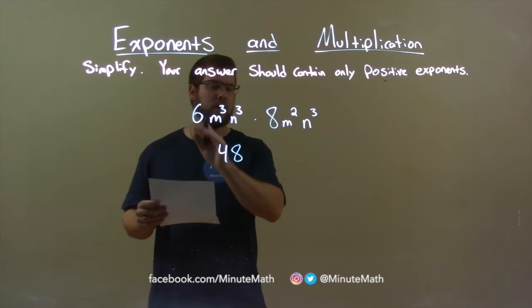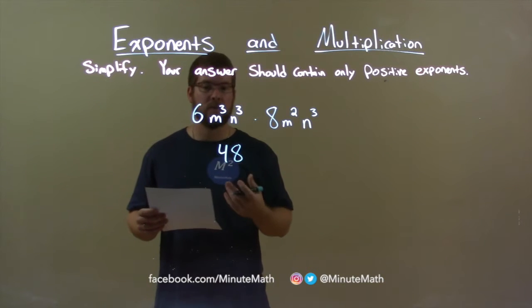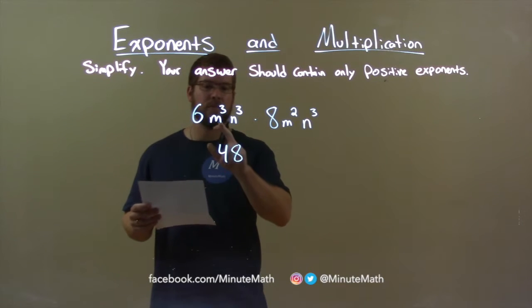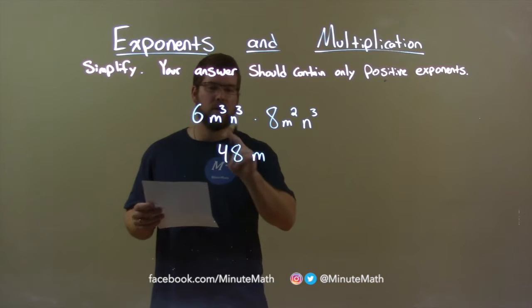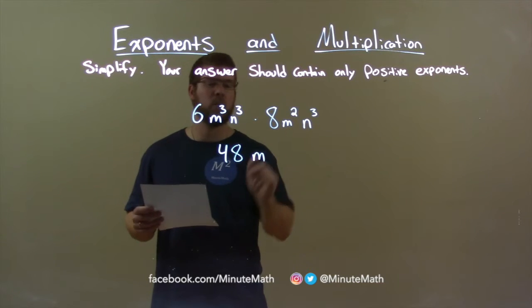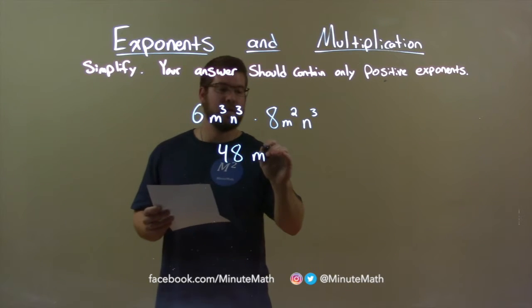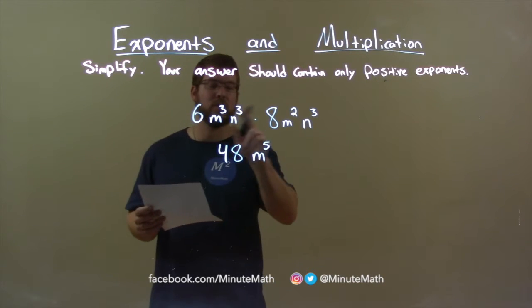I've now finished my coefficients and have to deal with the variables. m is the first variable, and we can only multiply like variables. m times m, right? Look at the basis. Well, m to the third power times m squared, we add the exponents is m to the fifth power. 3 plus 2 is 5.